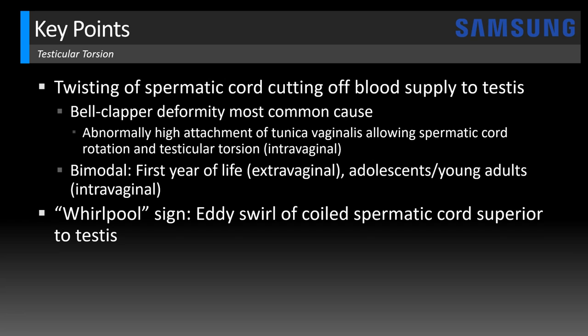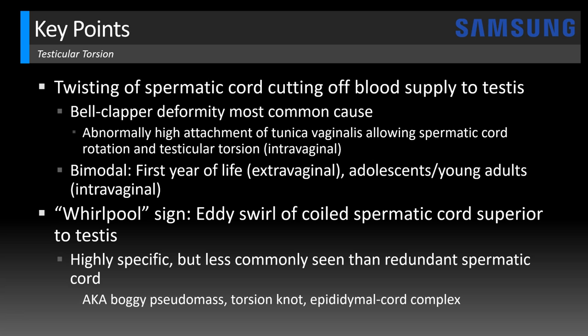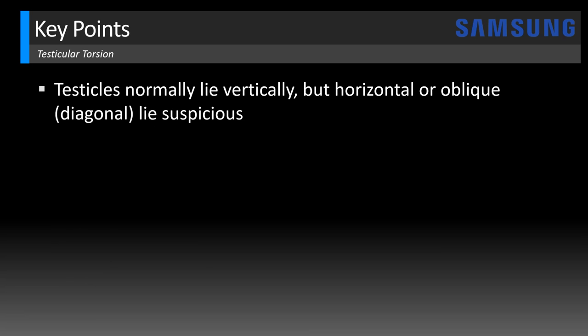The whirlpool sign is when we see an eddy swirl of the coiled spermatic cord located superior to the testis. While this is a highly specific sign for testicular torsion, it's less commonly seen than the redundant spermatic cord shown in the first two cases — also known as a boggy pseudomass, torsion knot, or more specifically an epididymal cord complex. It should be avascular or at least not hyperemic, which differentiates it from a paratesticular neoplasm or epididymitis. It's also important to look at testicular orientation: normally vertical, but horizontal or oblique position is suspicious for torsion.